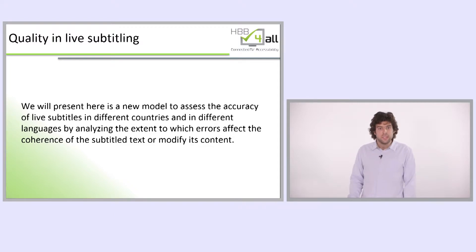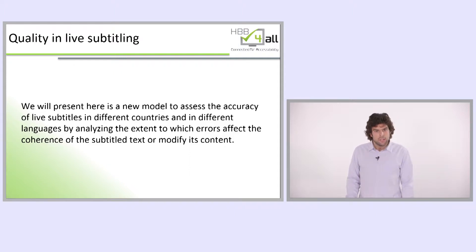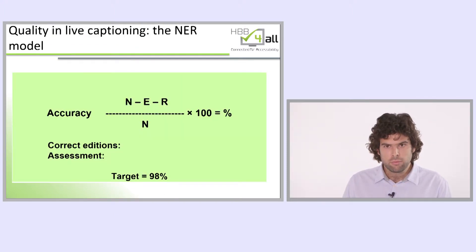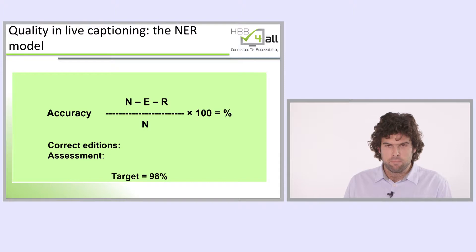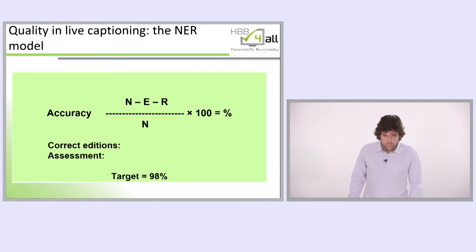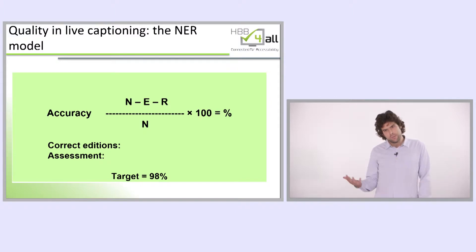In this part of the presentation, we will present a new model to assess the accuracy of live subtitles in different countries and in different languages, by analyzing the extent to which errors affect the coherence of the subtitle text or modify its content. The model is called the NER model, and the formula is as displayed on the screen. There is N for the number of words in the subtitles, E for the addition errors, R for recognition errors, divided by the number of words in the subtitles, multiplied by 100, giving us an accuracy rate. This is just part of the quality — it is an indication.